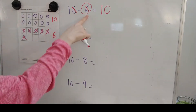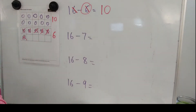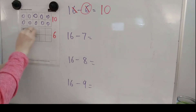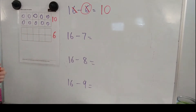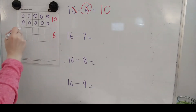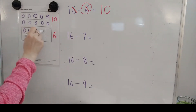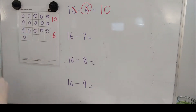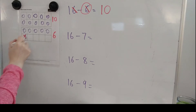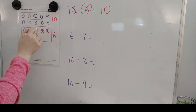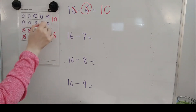Right? We didn't have to take anything apart here. Let's look at 16 minus 7. I have number 16 on my 10's frame, and I'm going to take away the 7. Take away 1, 2, 3, 4, 5, 6, 7.